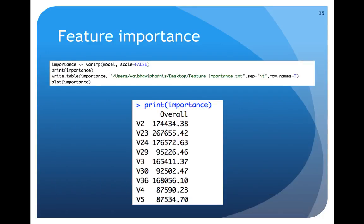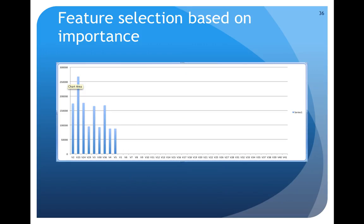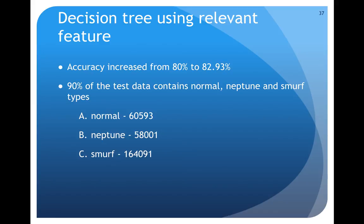In R there is a method called varImp which actually gives you the features that are most important for your model. So I tried it for my decision tree model and I got v2, 23, 24, etc. as the most important features for my model. I used these and tried running my decision tree with these relevant features and my accuracy actually increased from 80 to 82.93.